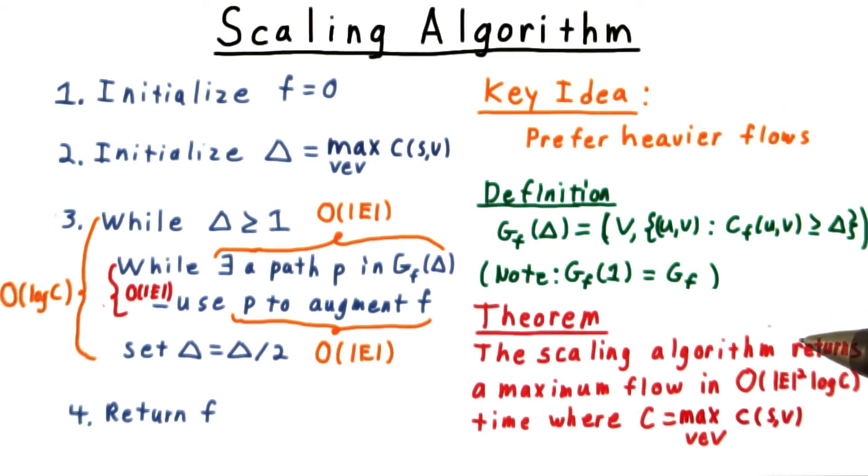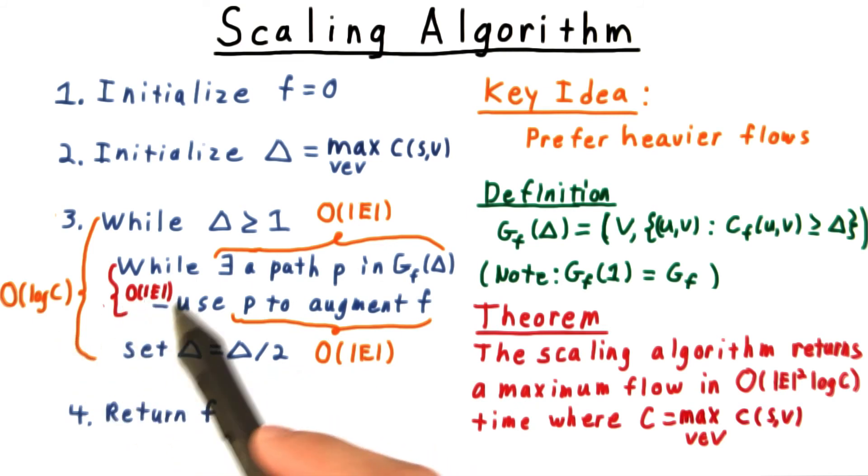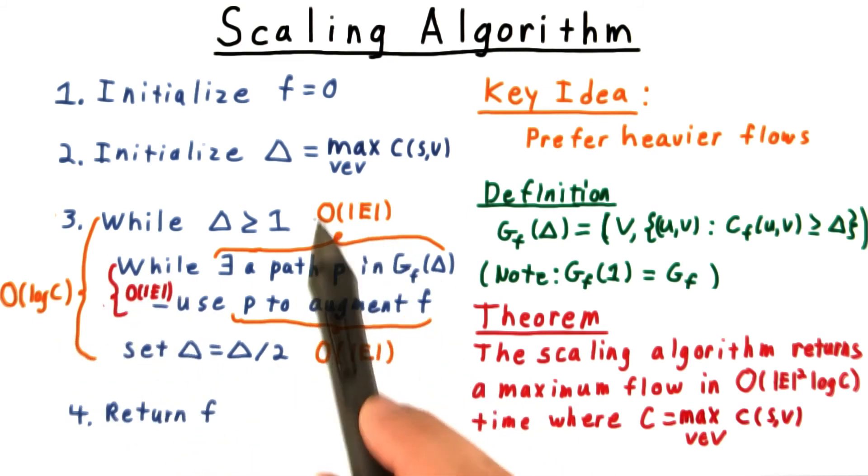This then completes the analysis of the scaling algorithm. We have at most log C iterations of the outer loop, order E iterations of the inner loop, and each one of these iterations takes order E time.